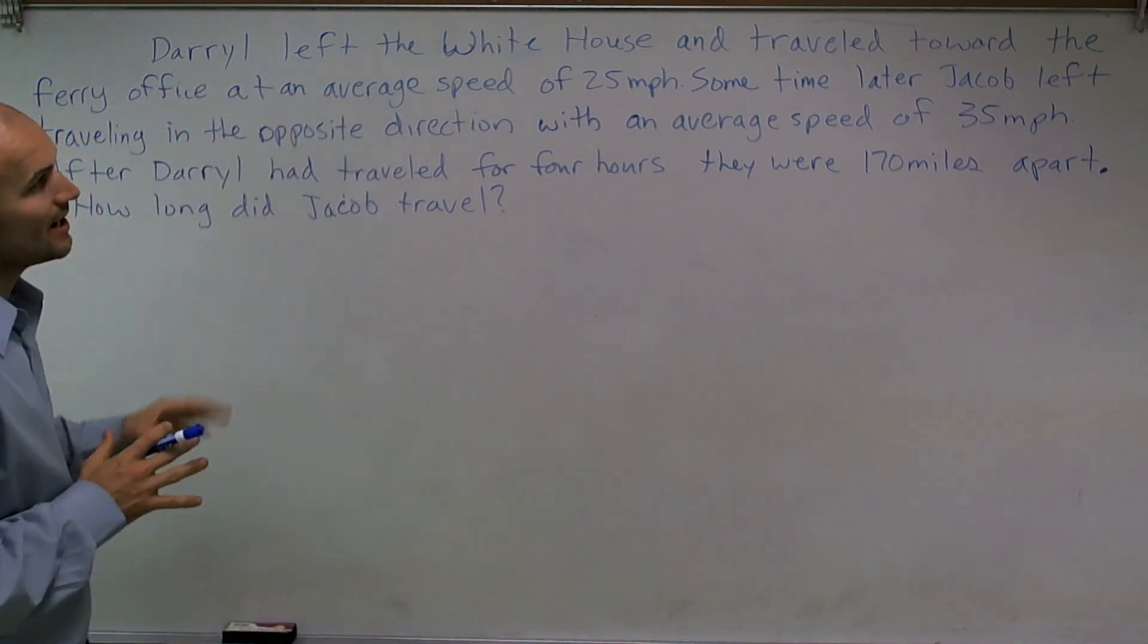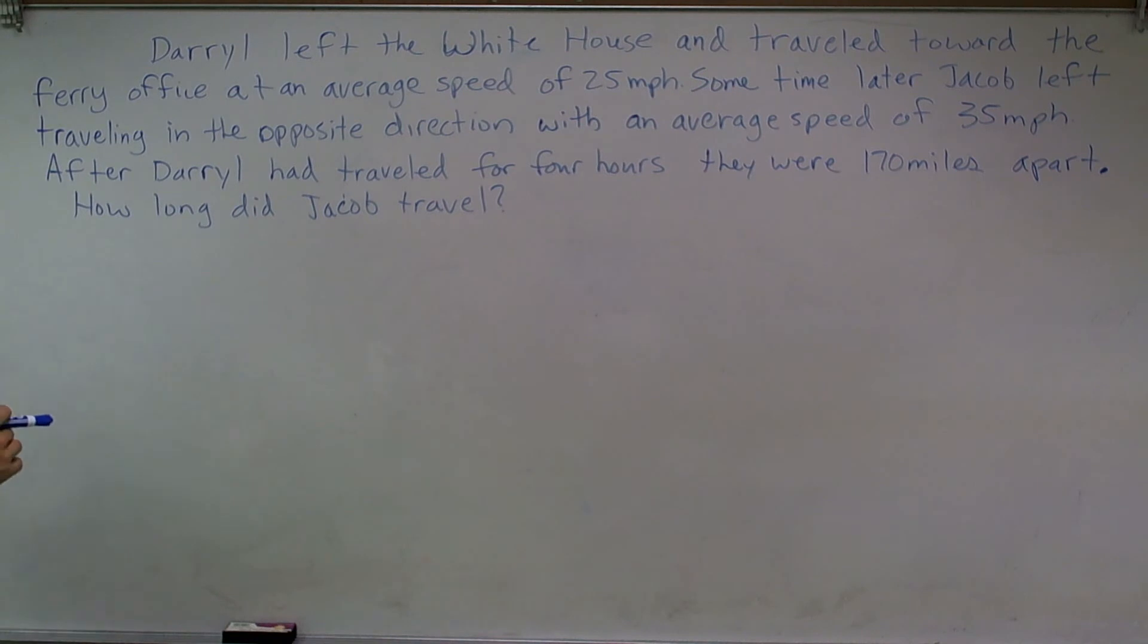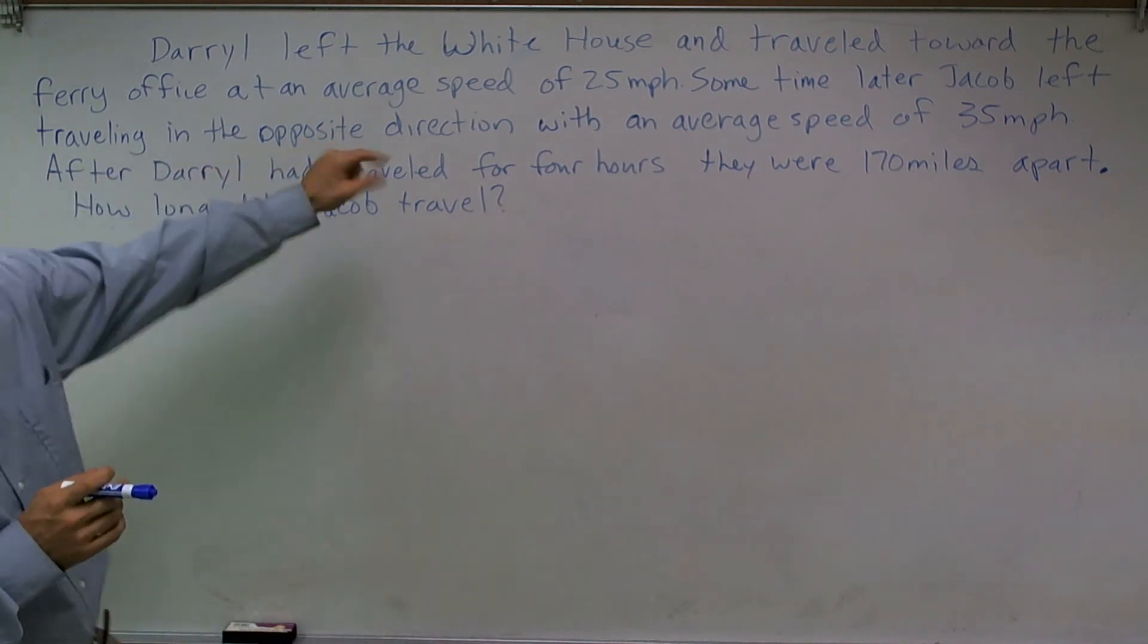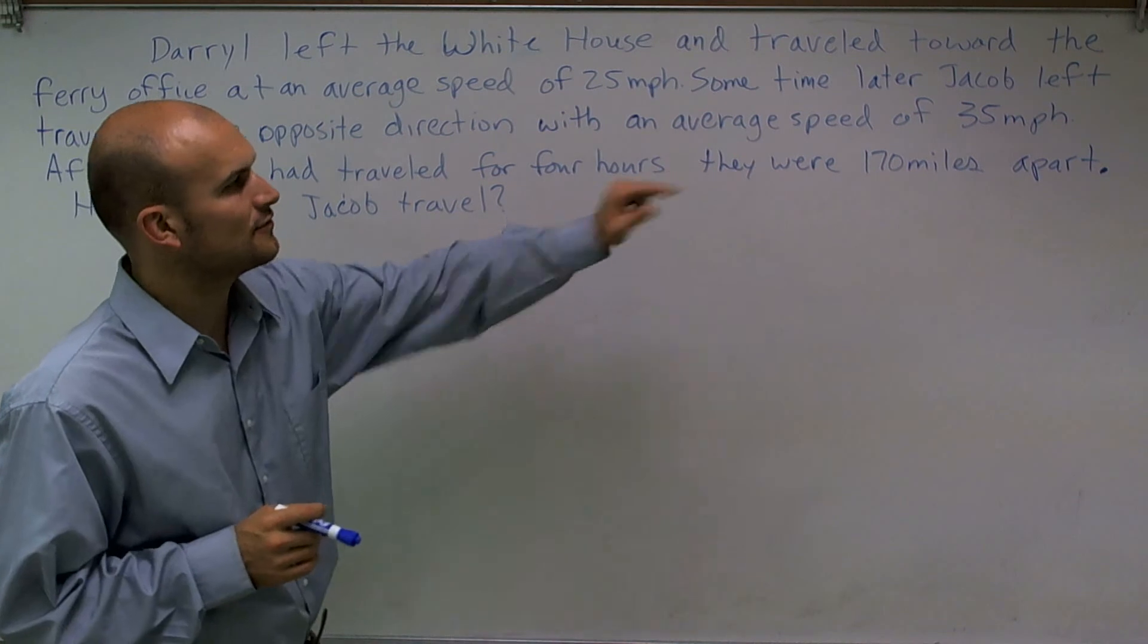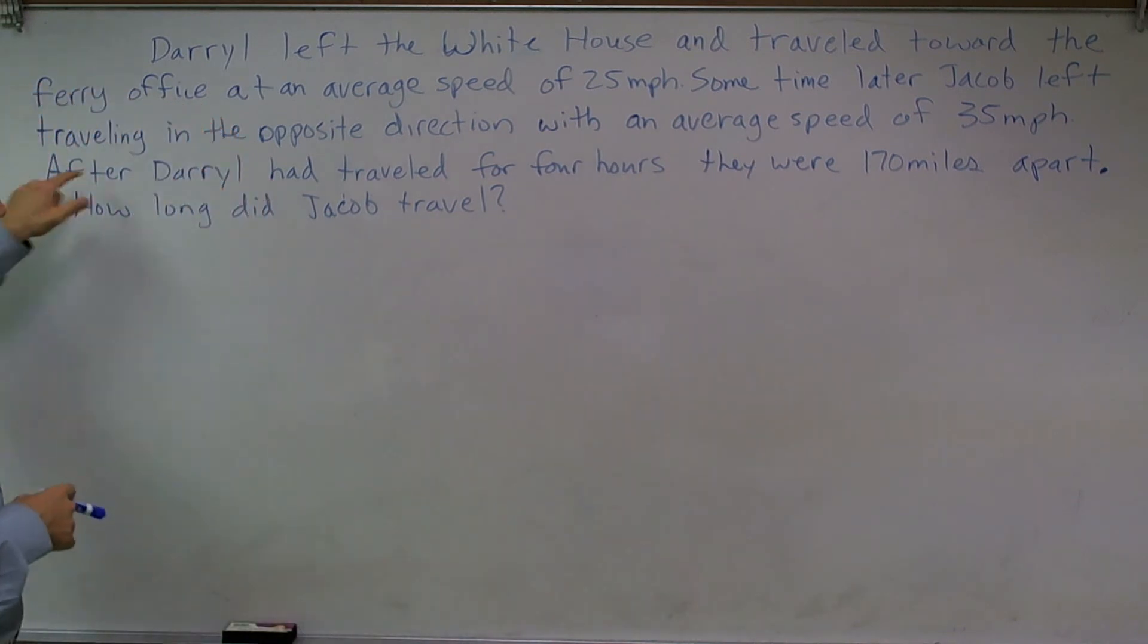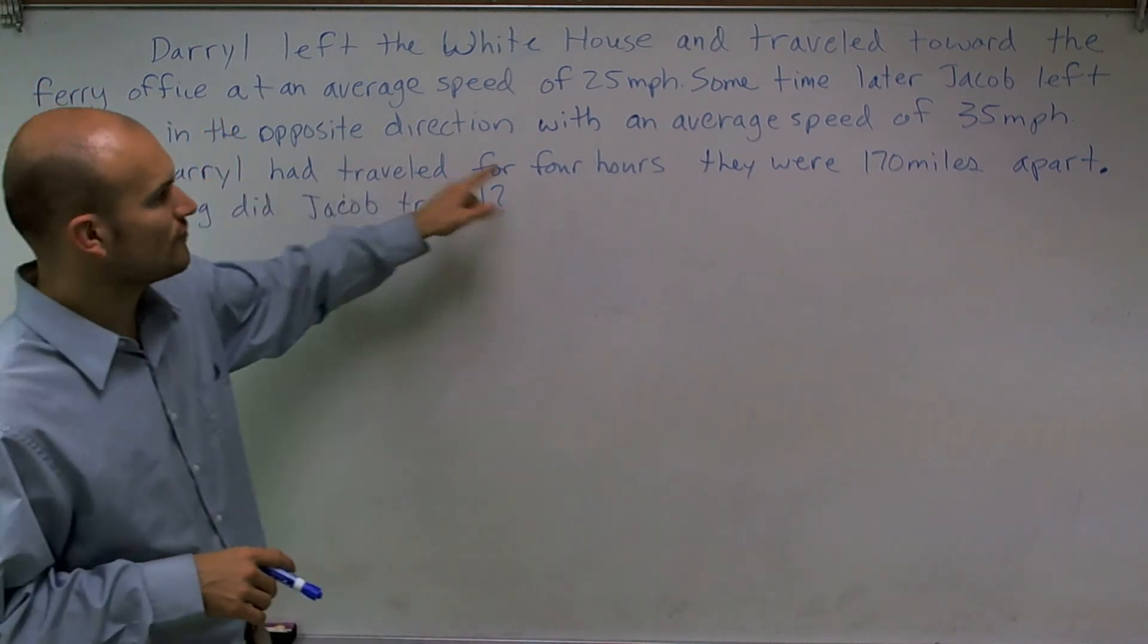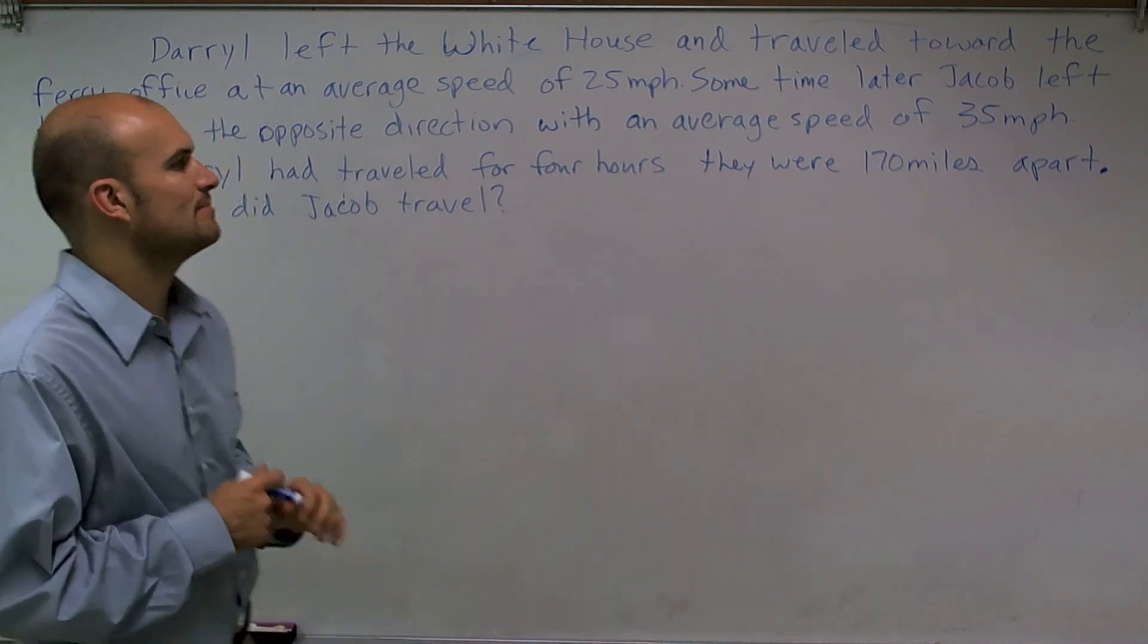Daryl left the White House and traveled toward the ferry office at an average speed of 25 miles per hour. Some time later, Jacob left traveling in the opposite direction with an average speed of 35 miles per hour. After Daryl had traveled for four hours, they were 170 miles apart.